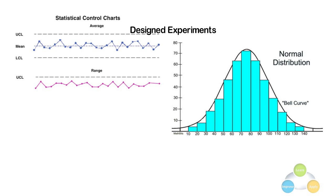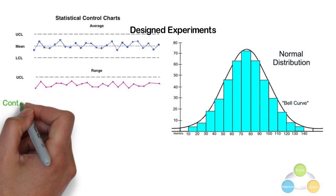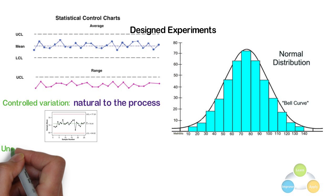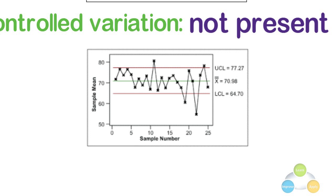He discovered that observed variation in manufacturing data did not always behave the same way as data in nature. Shewhart concluded that while every process displays variation, some processes display controlled variation that is natural to the process, while others display uncontrolled variation that is not present in the process at all times. So let's begin the learning of control chart.